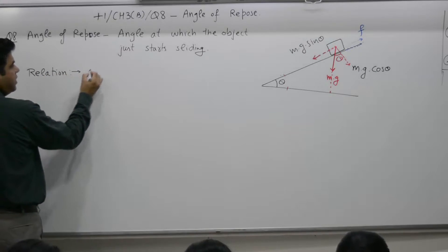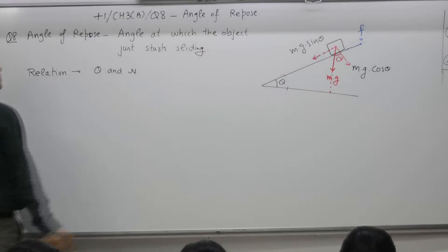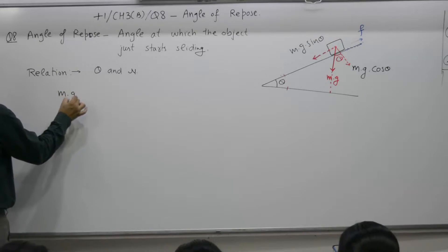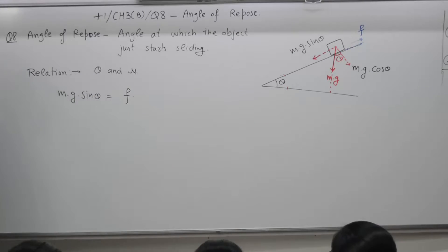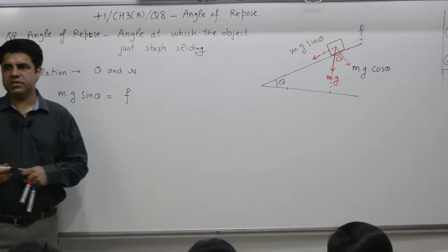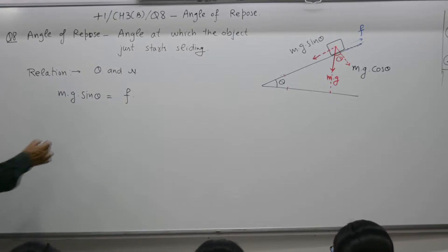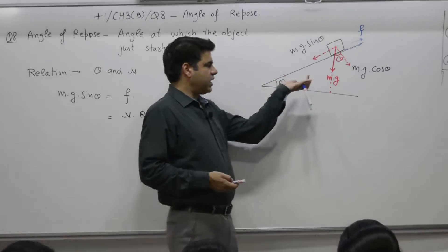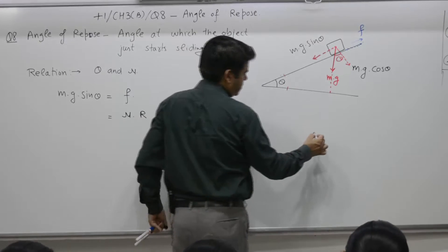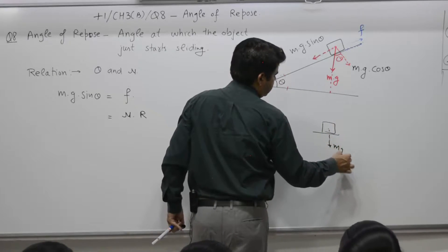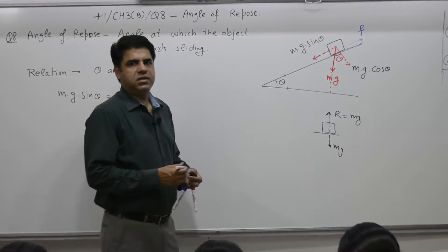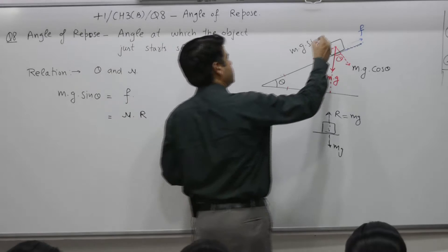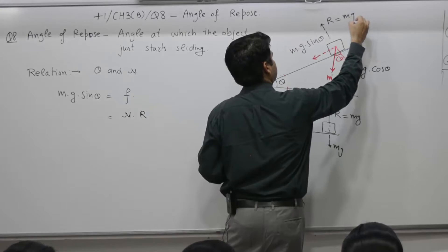We want to get a relation for theta and μ. The object just starts sliding when mg sinθ is equal to friction. Actually it is slightly more, but for the critical case we say it is just equal. Friction is equal to μ times the normal reaction R. When the plane is flat, weight is mg and normal reaction R equals mg in magnitude, but on the inclined plane it will press the floor not with mg but with mg cosθ.